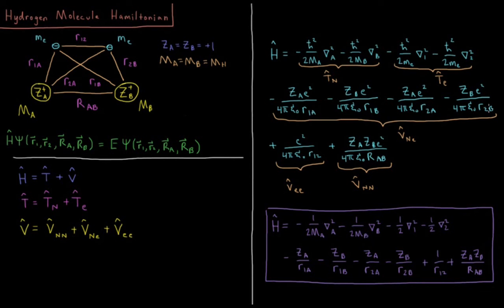Then we have four terms of electrons being attracted to nuclei. And in each case, the charge of the electron is negative E. The charge of the nucleus is plus Z times E. So electrons and nuclei have opposite charges, so they will attract one another, giving a negative potential energy. So these terms are negative ZA E squared over 4 pi epsilon 0 R1A minus ZB E squared over 4 pi epsilon 0 R1B minus ZA E squared over 4 pi epsilon 0 R2A. This is R2A.